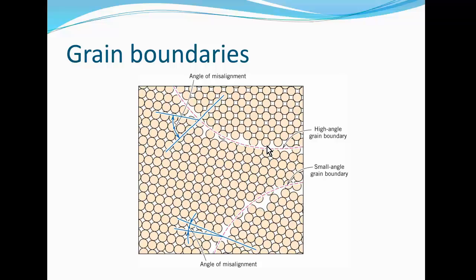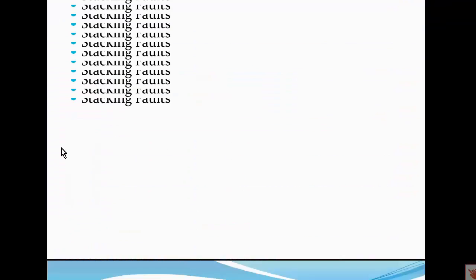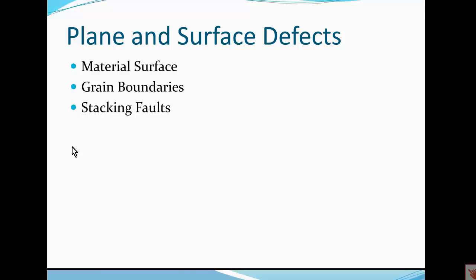We're going to increase from the one-dimensional line defects that we just started to two-dimensional defects or area defects. These are known as plane and surface defects. The material surface itself could be considered a defect.